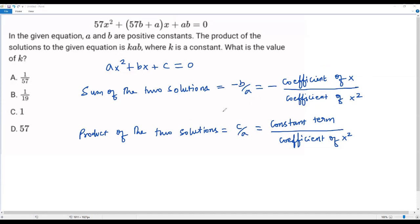Product of the two solutions equals c over a. C is the constant in the quadratic equation divided by a, the coefficient of x squared. In this problem, the sum formula is not required since we have information only about the product. Anyways, I've given it; this formula may be useful to solve some questions in SAT.